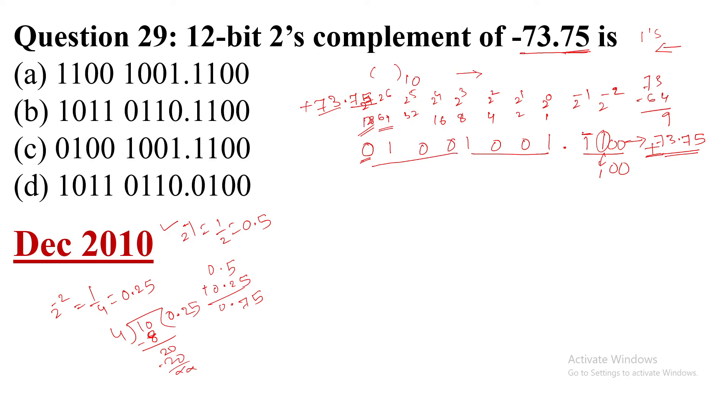So this 1 we will keep as 1, and then afterwards from here we will take 1's complement. We will convert 1 to 0, 0 to 1, 0 to 1, 0 to 1, 1 to 0, 0 to 1, 0 to 1, 1 to 0, 0 to 1.